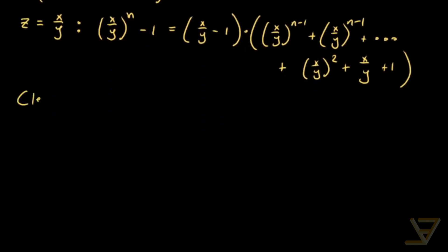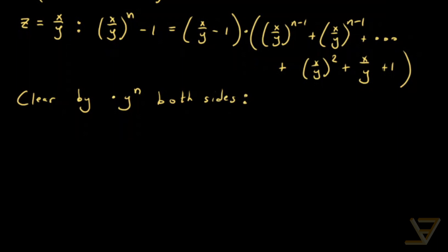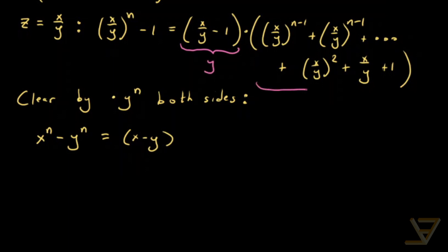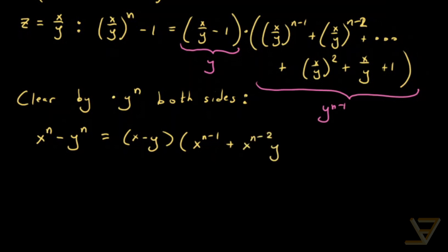Now what we're going to do is clear the denominators by multiplying by y to the n on both sides. What we get is that x to the n minus y to the n — we have the difference of nth powers now — is equal to x minus y. We're multiplying by one y on one side, and for this sum factor we're multiplying by y to the n minus 1, so together it's y to the n. We get x to the n minus 1 plus x to the n minus 2 times y.